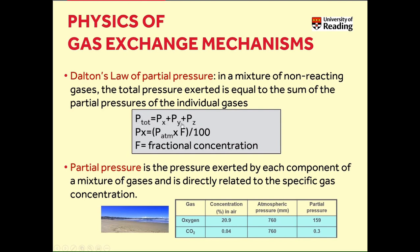So a mixture of three gases X, Y, Z is given by the sum of the partial pressures of the three gases. The partial pressure of a gas is directly related to its specific concentration, and is calculated by multiplying the fractional concentration of the gas by the barometric or atmospheric pressure, divided by 100. Applying this formula, the partial pressure of oxygen at sea level — where oxygen concentration is 20.9% and atmospheric pressure is 760 mmHg — is 159 mmHg. The partial pressure of carbon dioxide can similarly be calculated and equals 0.3 mmHg.